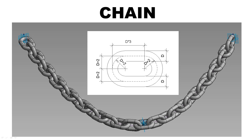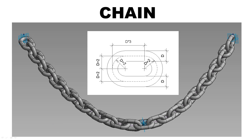Hello everyone. Today I would like to show you how to create a chain Revit family. In this video, I will create two parts of the family: chain ring piece and main body, and then load and combine them into the main family. I will refer to the dimensions in the picture to create the parameters. Before going to Revit, I would like to request you to subscribe to the channel and click the notification bell for the next video. You can download this family in the links below. OK, let's go to Revit.